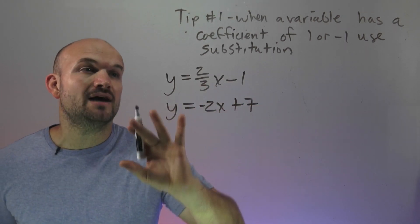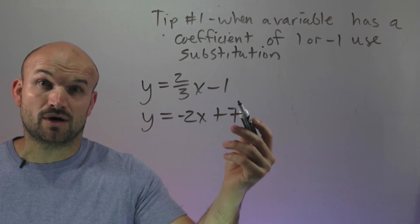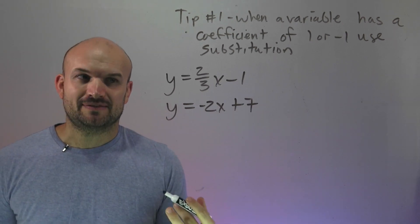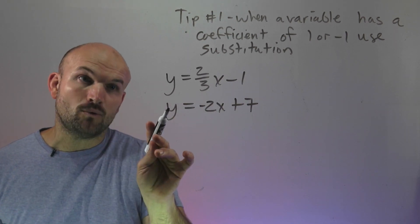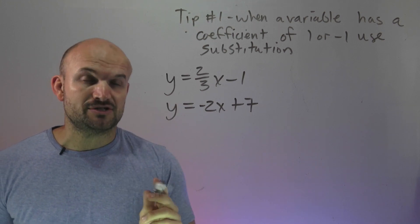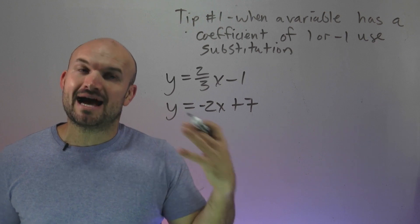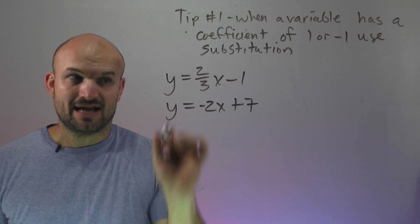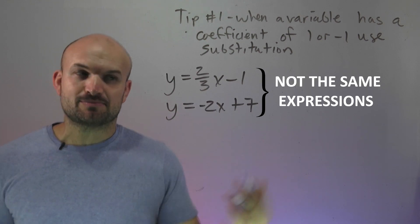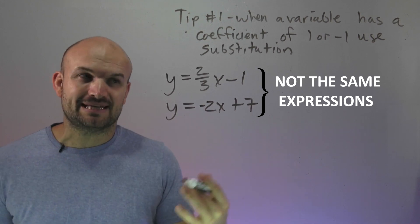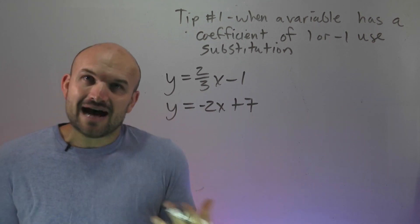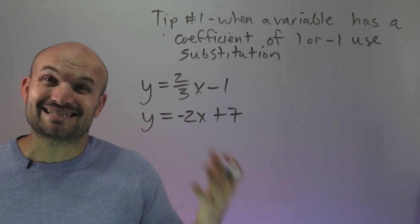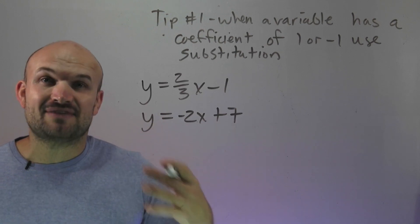In this first example, you can see we have two equations: y equals two-thirds x minus 1, as well as y equals negative 2x plus 7. The interesting thing — going back to my tip — you can see that the variable y has a coefficient of 1 for both equations. So this might bring up the idea that I should look to use substitution. The interesting thing is y equals this expression and y equals that expression, but those are not the same expressions because we don't know the value of x. To solve a system of equations, we're trying to identify the value of x and y that satisfies the solution.